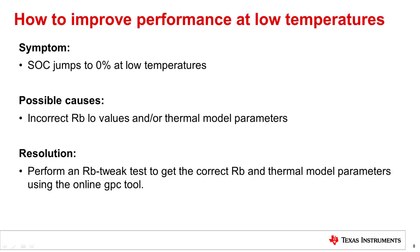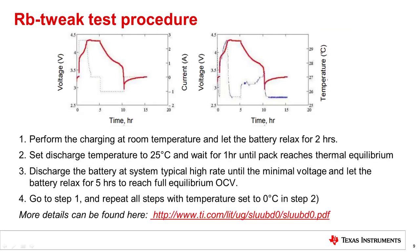Another instance where further configuration may be required is under low temperature conditions when an SOC jump to 0 may be observed. The most likely causes are incorrect RB low values or incorrect thermal model parameters. To obtain the correct RB low and thermal model parameters, an RB tweak test must be performed and the data fed to the online GPC tool.